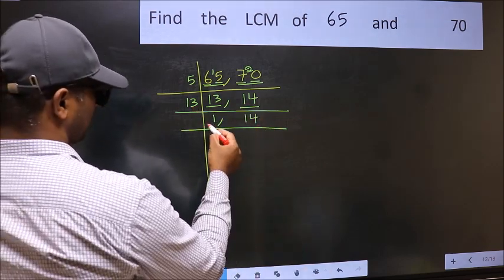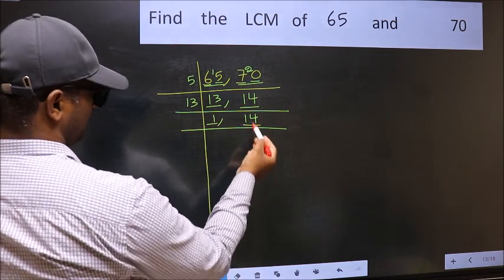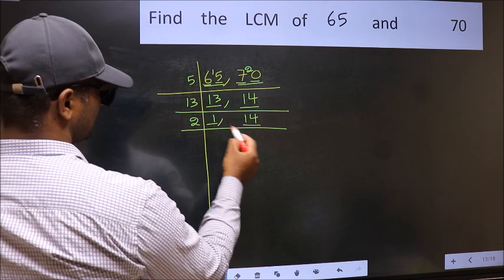Now we got 1 here, so focus on the next number, 14. 14 is 2 times 7.